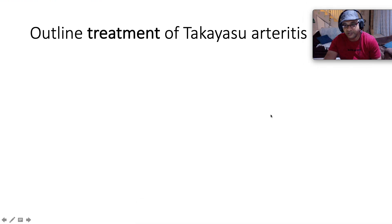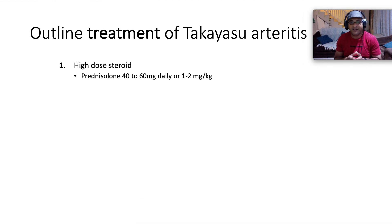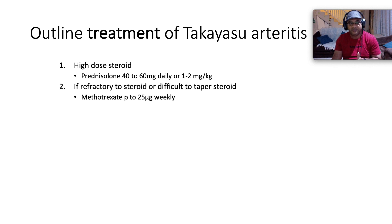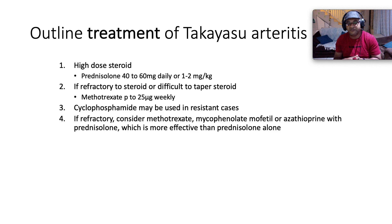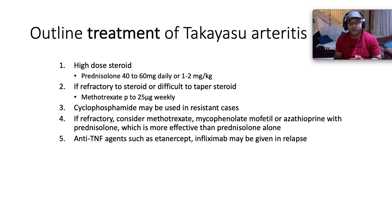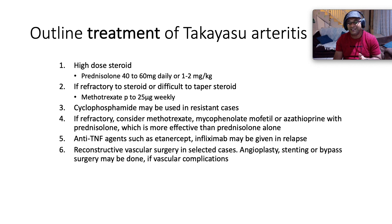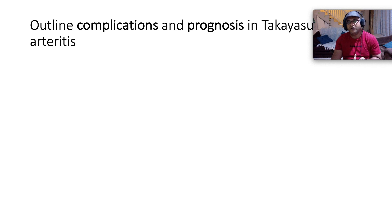Treatment of Takayasu arthritis: the mainstay is high-dose steroids — 1 to 1.5 mg per kg daily, orally. If the disease is refractory to steroids or difficult to taper, you can add methotrexate up to 25 mg weekly co-administered with folate. Cyclophosphamide can be used in resistant cases. Other options for refractory disease include mycophenolate, azathioprine, and methotrexate with prednisolone, which is more effective than prednisolone alone. Anti-tumour necrosis factor agents such as infliximab and etanercept may be used in cases of relapse. Reconstructive vascular surgery, angioplasty, stenting, or bypass surgery may be done if there are vascular complications. Hypertension should also be addressed and treated.